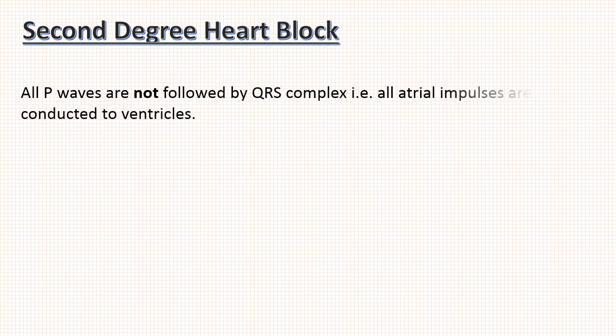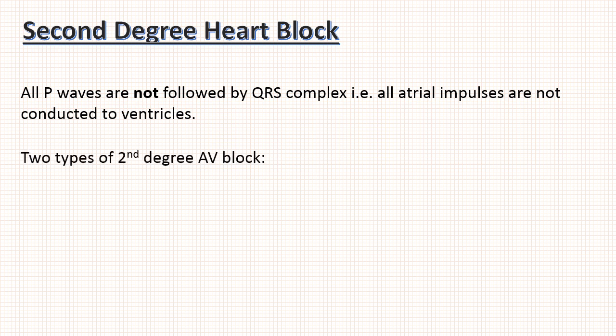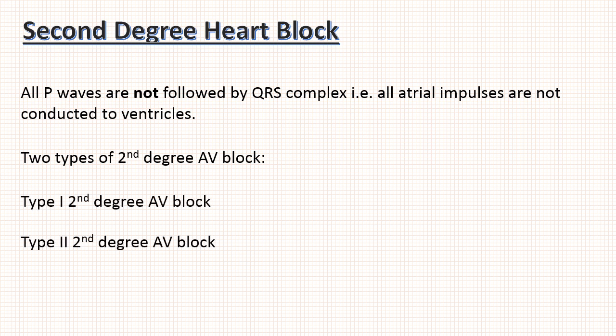Next is 2nd degree AV block. Here all P waves are not followed by a QRS complex — that is, all atrial impulses are not conducted to the ventricles. There are basically 2 types of 2nd degree AV block: Type 1 and Type 2, also known as Mobitz Type 1 and Mobitz Type 2 respectively.